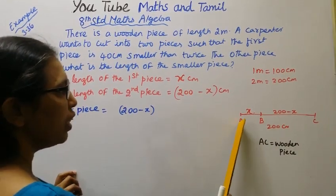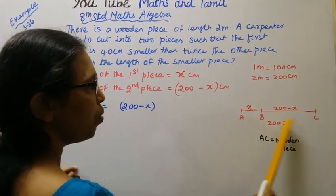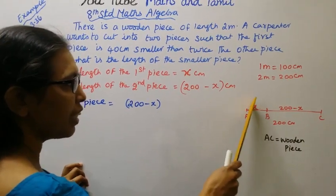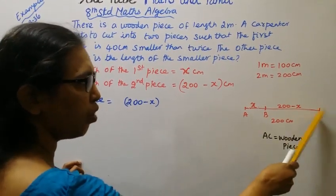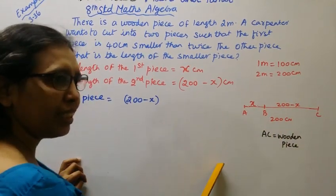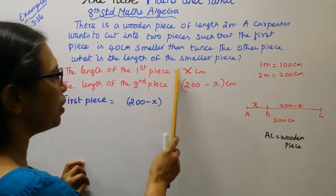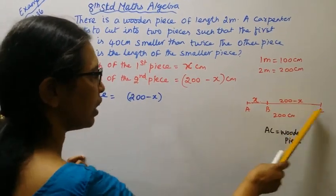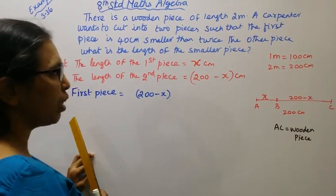That is 1 piece cut into 2 pieces. The length of the first piece is x centimeters. The length of the second piece is 200 minus x centimeters.